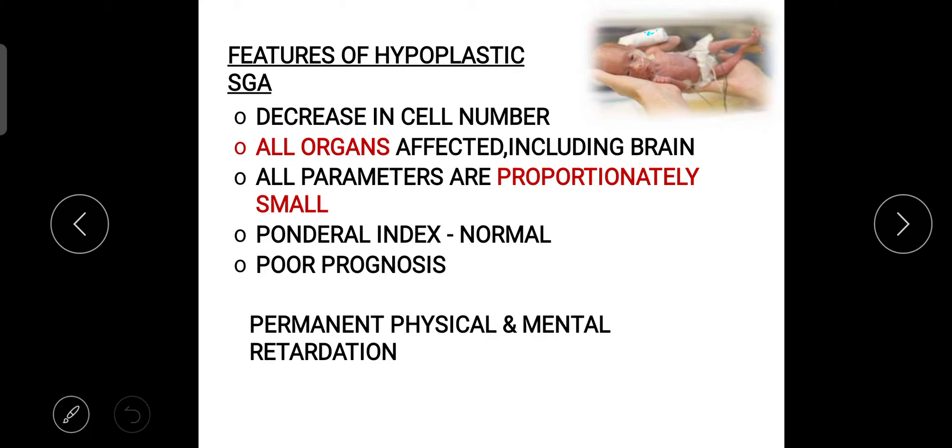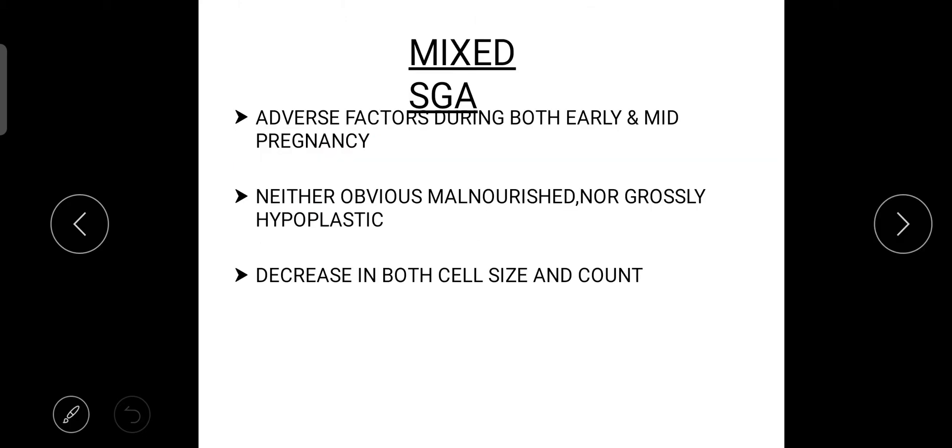Next one is mixed SGA. You know what is hypoplastic SGA and you know what is malnourished SGA. So when in the babies you will see both the symptoms then we'll call it mixed SGA. Adverse factors during both early and mid pregnancy, neither obvious malnourished nor grossly hypoplastic, and it is decreased in both cell size and cell count.